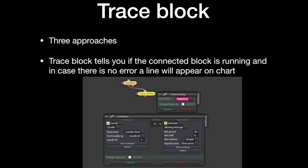What is the trace block doing? The trace block, if connected to your condition, will paint a color line on the chart. So you can use it to verify if the condition runs.